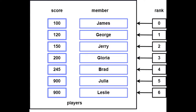Hi everyone and welcome to this video. Today we're going to be looking at the sorted set data structure that Redis provides. The sorted set allows us to store unique items in an ordered way. The order of these items is determined by the score that each member has. Each member also has a rank associated with it, which is very similar to what we may think of as an index in a list.